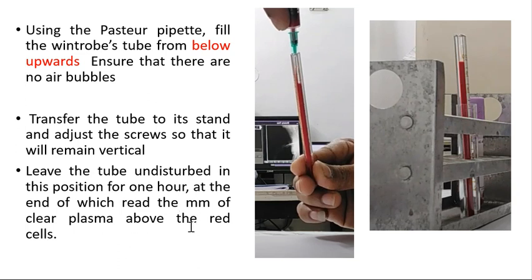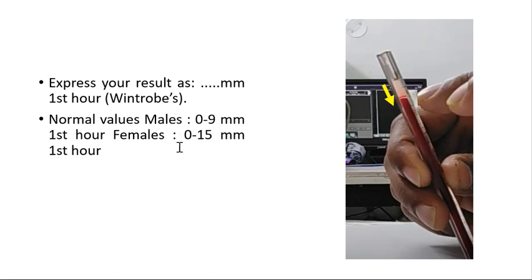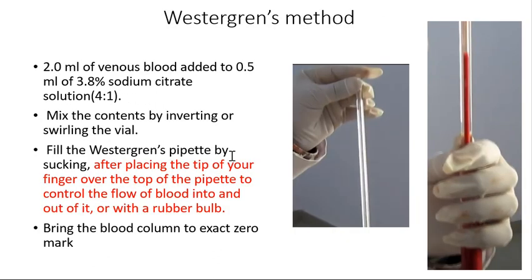Leave the tube undisturbed in the vertical position for one hour. At the end of one hour, read the plasma column. The tube will show plasma on top and packed cells below. Express the result as the reading in mm per first hour — for example, 10 mm/1st hour. Normal values by the Wintrobe method are 0–9 mm/1st hour for males and 0–15 mm/1st hour for females.